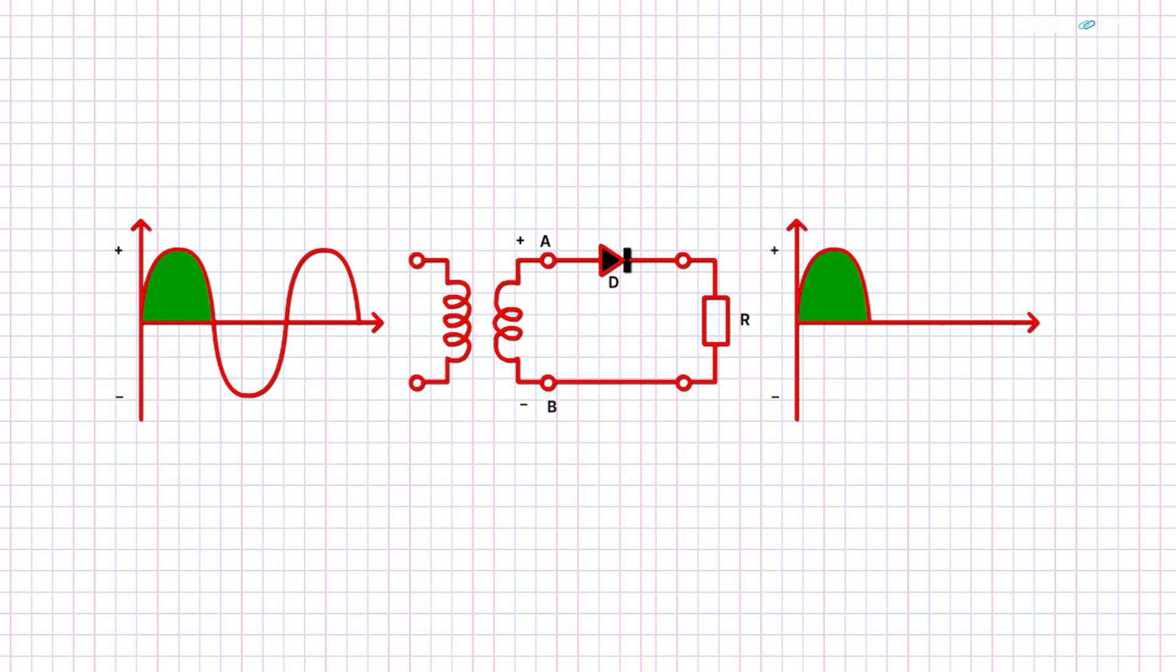Thus, when the positive half of the waveform passes through the diode, point A is at a higher potential than point B. The diode is forward-biased and the current flows through it. Conversely, during the second half of the cycle, point A is now at a lower potential than point B. Here, the diode is reverse-biased and we get no output. Thus, we get an output current in one direction.